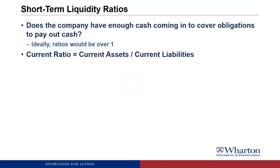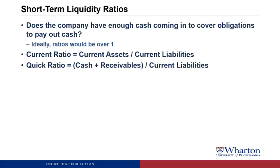A drawback to the current ratio is that not all current assets will turn into cash. Some are prepaid expenses like prepaid rent, which won't help pay liabilities. Some are inventory, which is not that liquid because you have to sell it and then wait to collect receivables before it becomes cash. A more conservative ratio is the quick ratio: cash plus accounts receivable divided by current liabilities. Since cash and receivables are the most liquid assets, this asks whether just those two categories cover obligations. It's hard for this ratio to be over one — generally it's a little less than one.